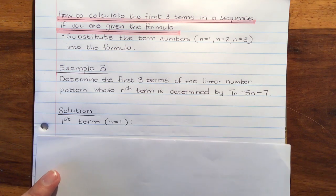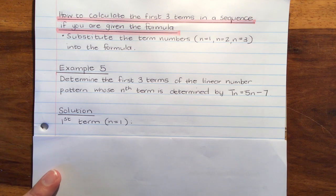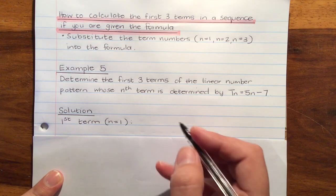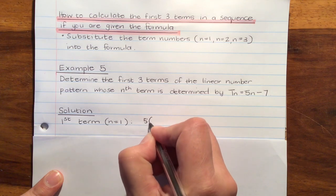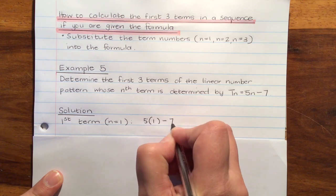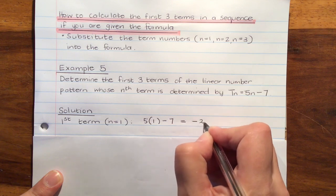So to solve this, we're just going to say, if we work out what the first term is, I'm going to substitute n equals 1 into that formula. So 5 times 1 minus 7 is going to give me negative 2.